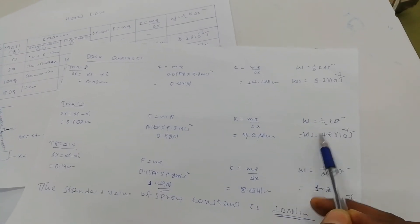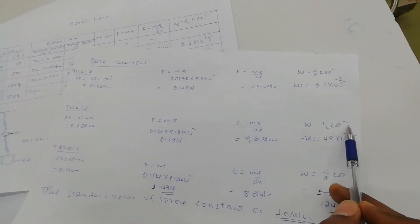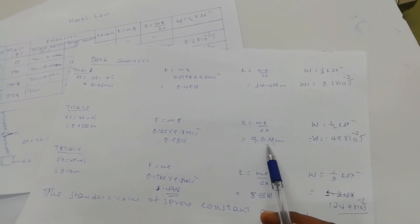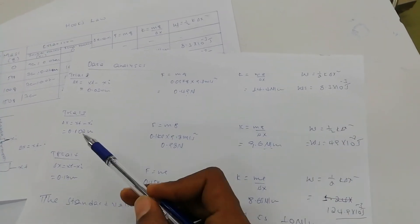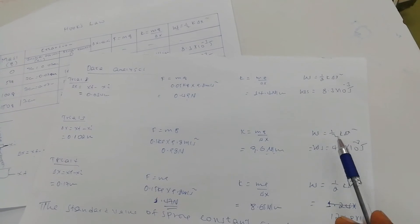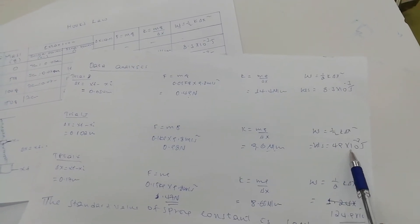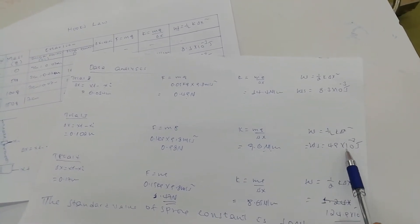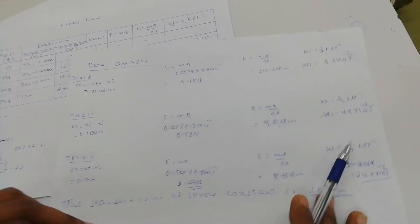The work done on the spring for the third trial is one-half k times delta-x squared. With spring constant 9.6 and delta-x 0.102, the work done is 0.49 times 10 to the power minus 3 joules.